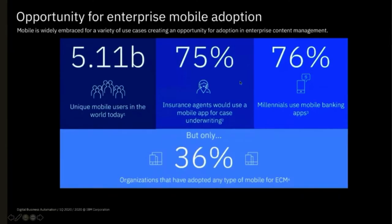If you're like me, you're probably more addicted to your smartphone than you care to admit. And if you've managed to escape that fate, you've probably noticed your mobile usage going up in recent years. We know that right now there are 5 billion unique mobile users in the world today — that's about 71% of the population of the globe. And the really interesting stat here is that only 36% of organizations have adopted any type of mobile in the ECM space.